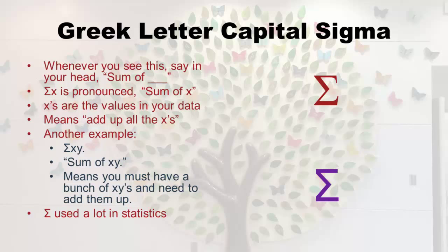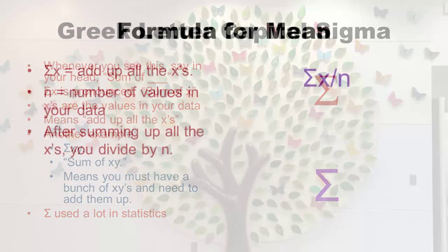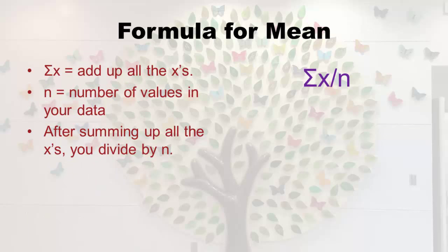Here's the formula for the mean — a lot of you already know how to calculate it. It's this ratio: on the top of the fraction is sum of x, you add up all your x values; on the bottom is n, which is however many you have. So you add them all up and divide by however many you have. Using those same six data points from the median example: sum of x is 40, n is 6, and 40 divided by 6 is 6.7. That would be the mean for that data. You probably already knew how to do that, but this is how you express it in statistics.